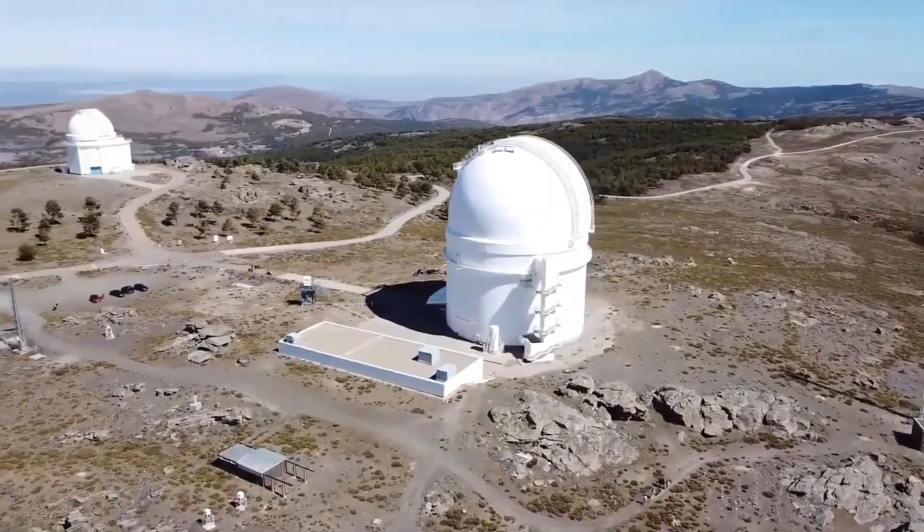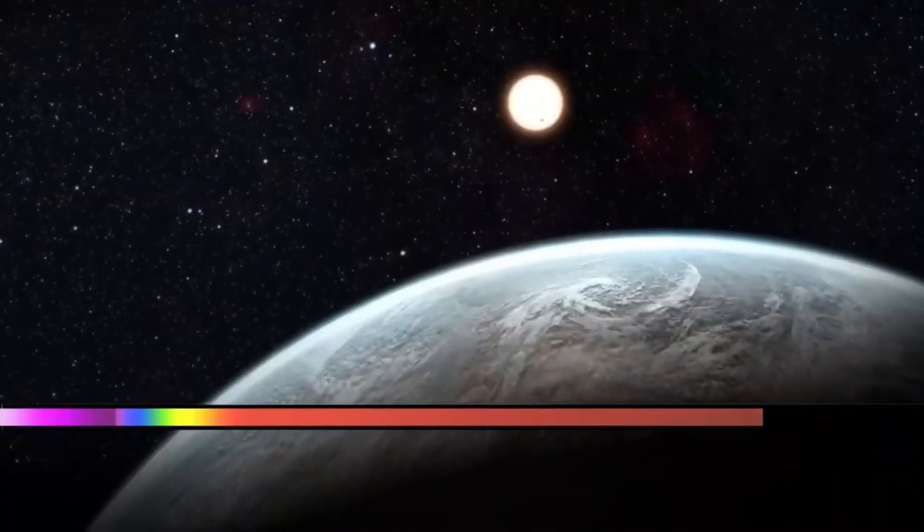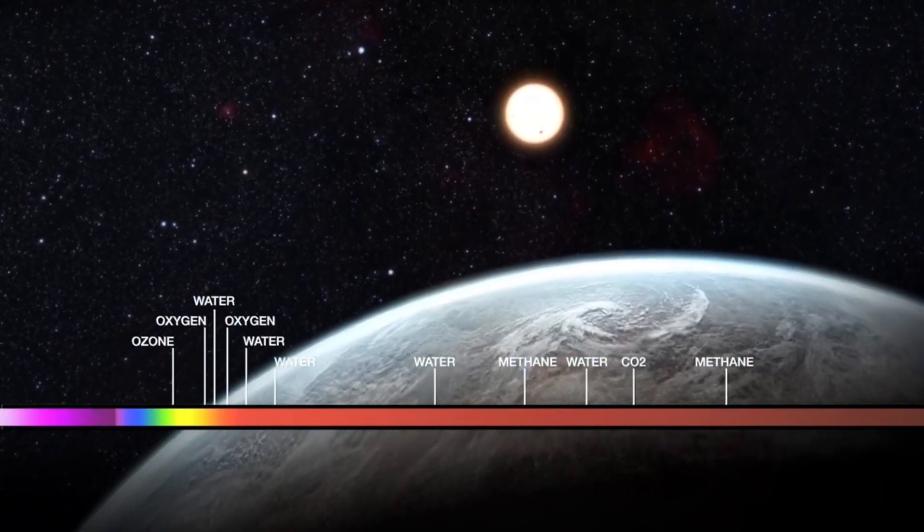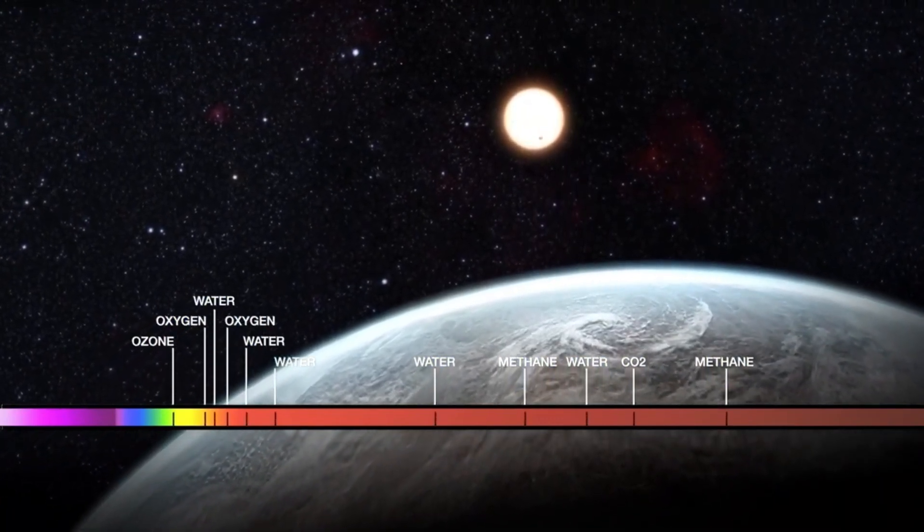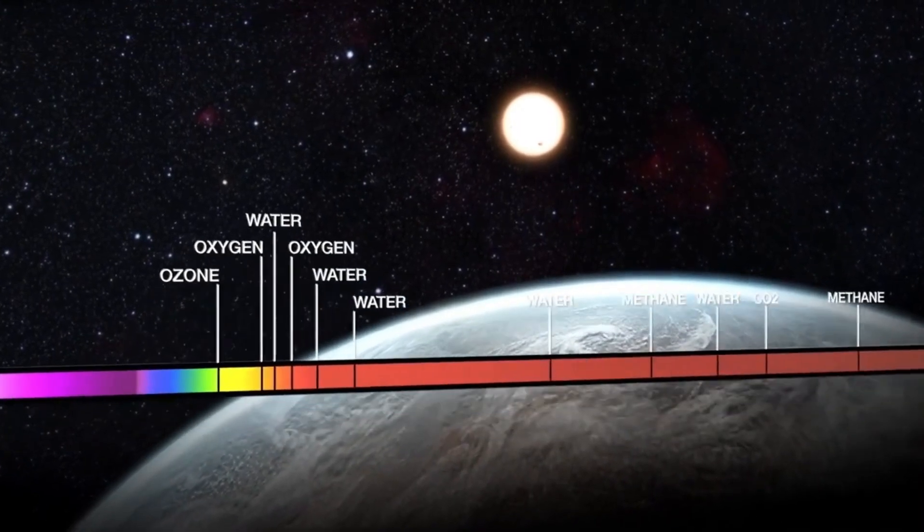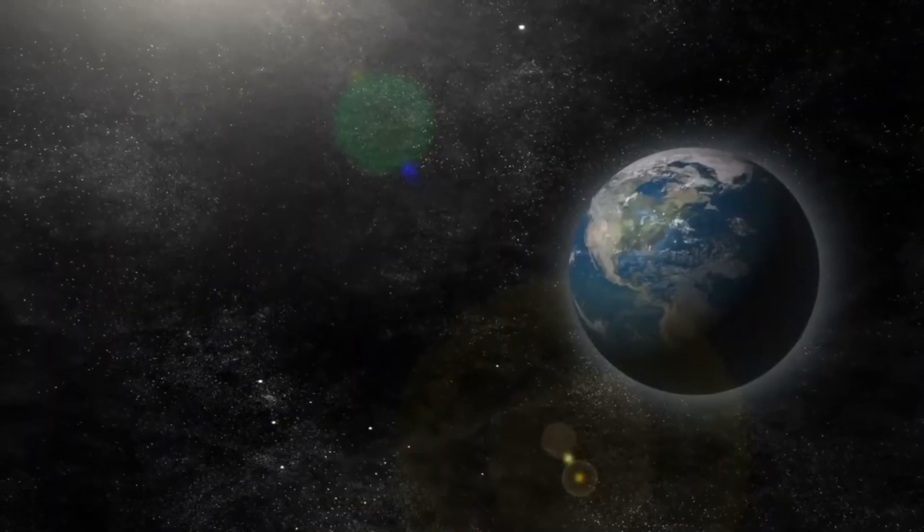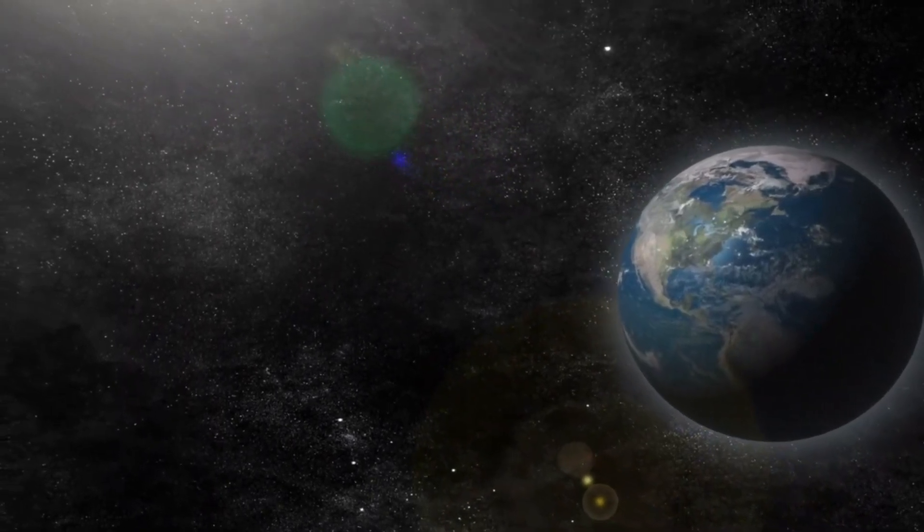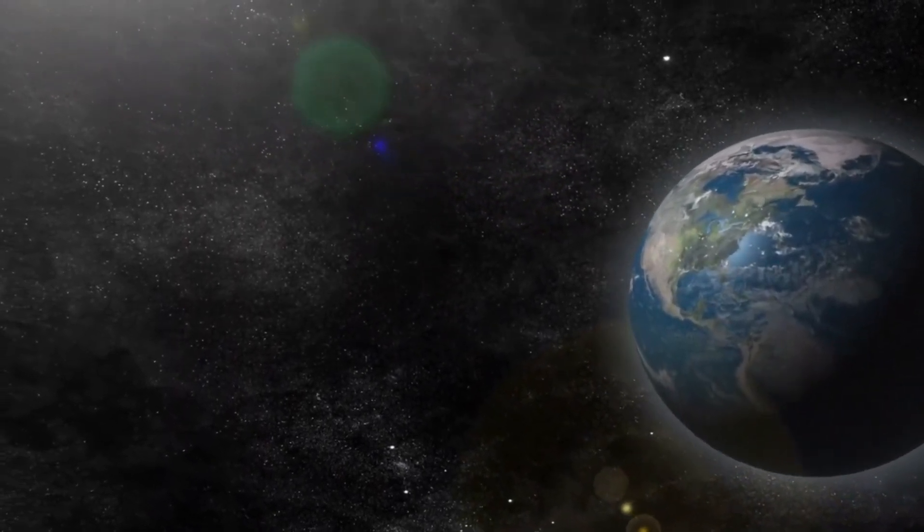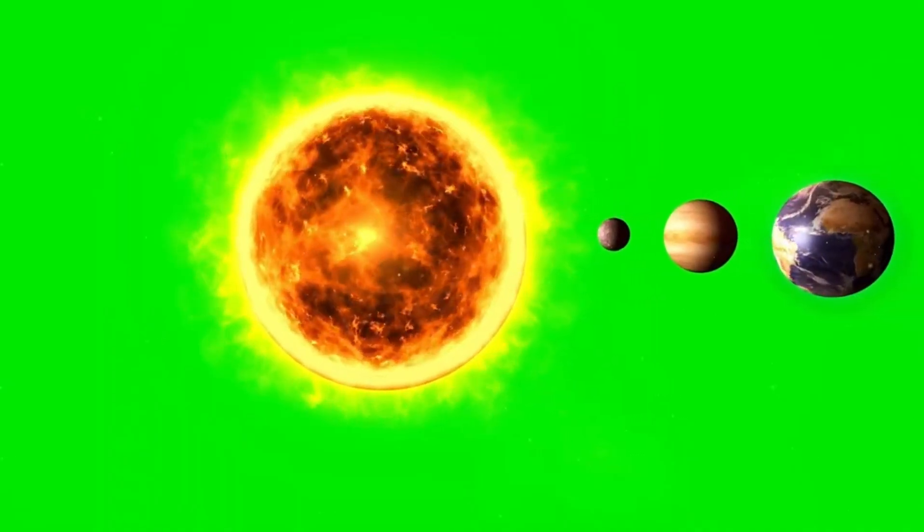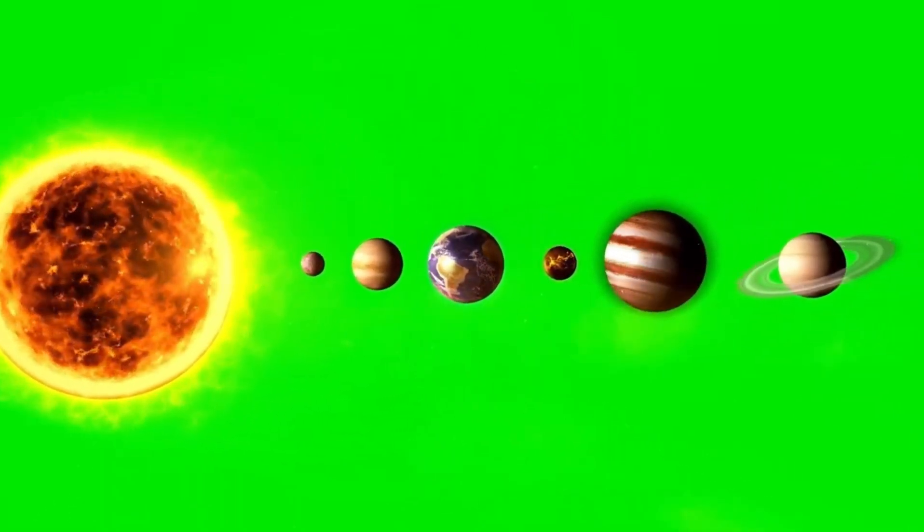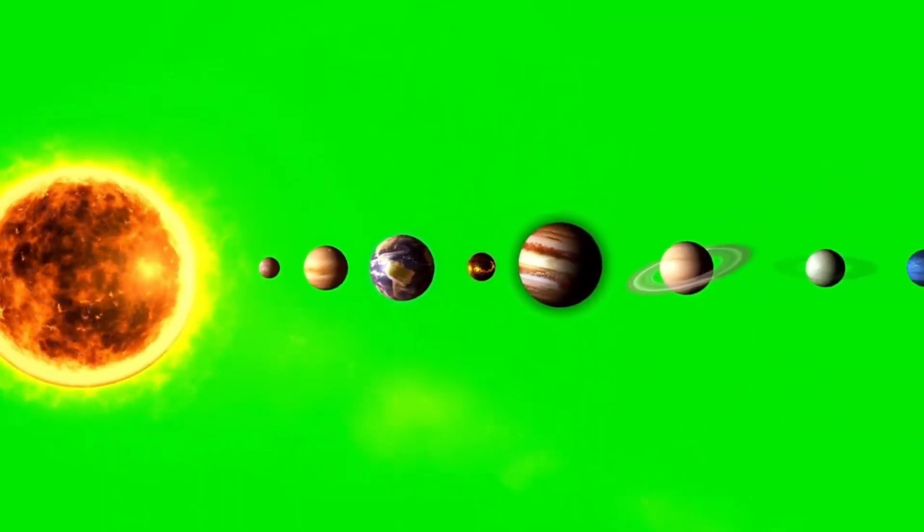Some planets may have more stable climates, larger habitable zones, or other characteristics that could foster a wider variety of life forms. These planets may not necessarily resemble Earth in their physical appearance, but they could present even more ideal environments for the formation of life. As our search for habitable planets expands, scientists are learning that planets don't have to be Earth-like to support life. Some of these worlds may harbor conditions that are superior to those on Earth, allowing for a greater diversity of species and ecosystems.